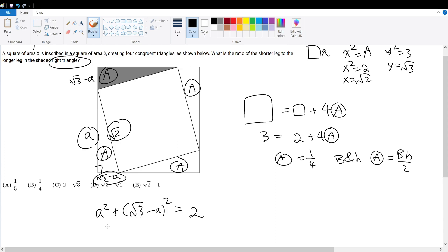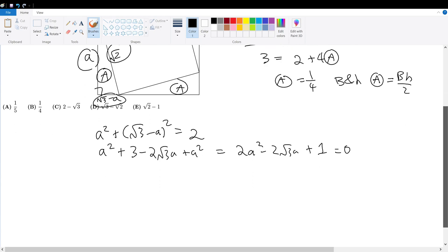So let's simplify. A squared plus 3 minus 2 root 3A plus A squared gives 2A squared minus 2 root 3A plus 3 equals 2. Subtract 2 on both sides. We get plus 1 equals 0.